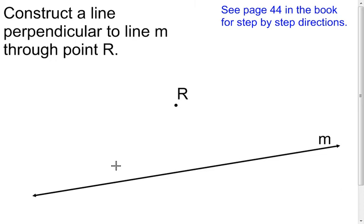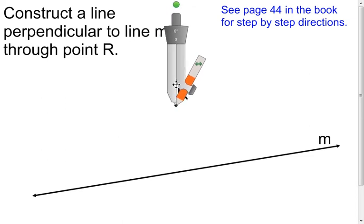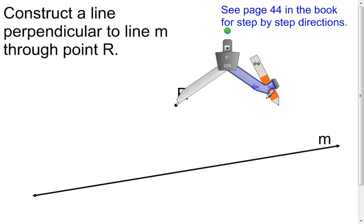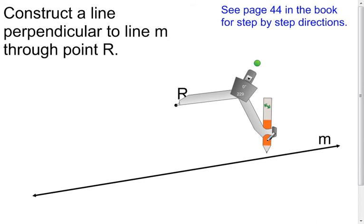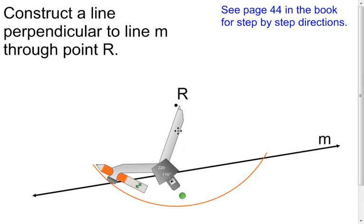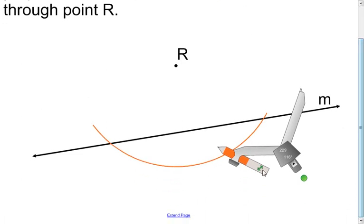My last construction is a little different. I want to create a segment perpendicular to a line — in this case line M — that goes through point R. Start by putting the point of the compass at point R, then open the compass so that when you make an arc it crosses line M at two points. This essentially creates a segment from one intersection point to the other, and now we're going to bisect that segment.